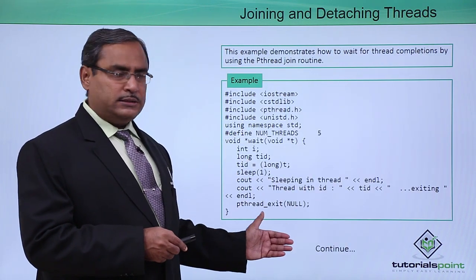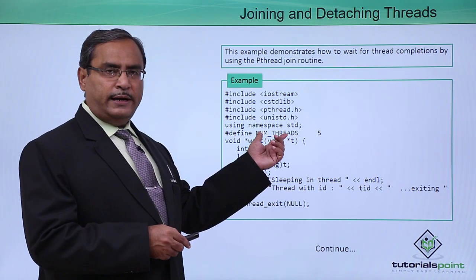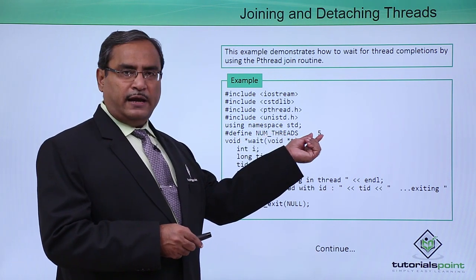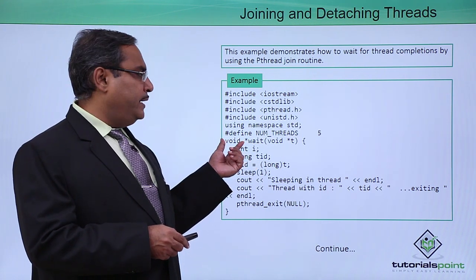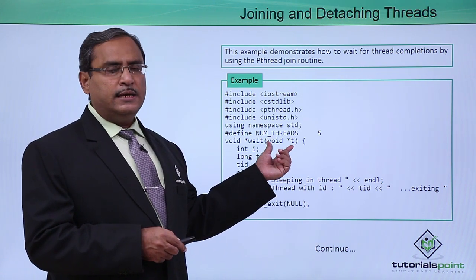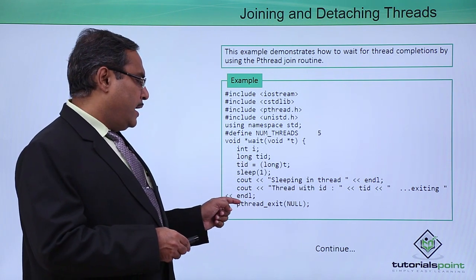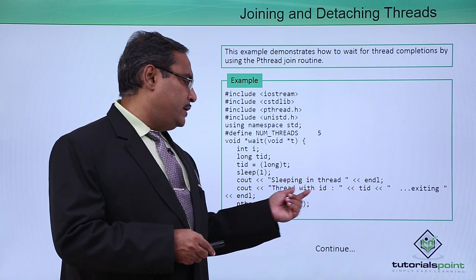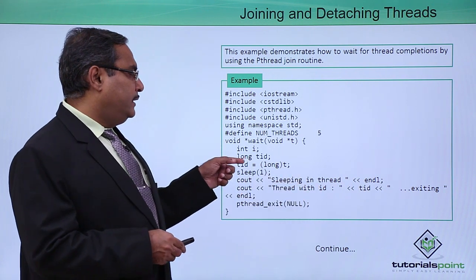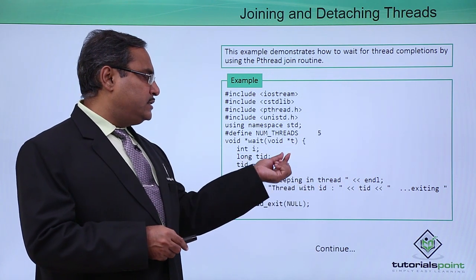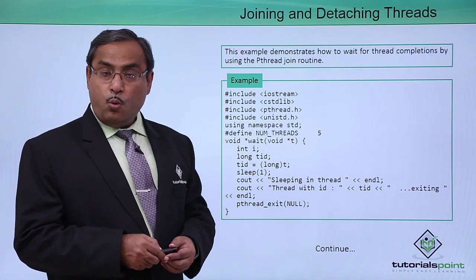Here is the program code. We have defined NUM_THREAD as a constant with the value 5 — it is a symbolic constant. Then there is a function called 'wait' which returns a generic pointer and takes a generic pointer as input argument. The body prints 'sleeping in thread' with the thread ID (Tid), where Tid is initialized by typecasting the input argument t as long.